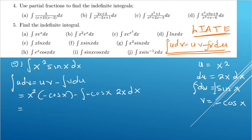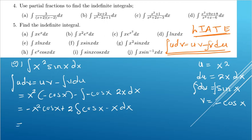The two negatives give a positive. Factoring out the constant 2, we get negative x²·cos(x) plus 2 times the integral of x·cos(x) dx. We need another round of integration by parts for this inner integral. So u equals x, du equals dx, dv equals cos(x) dx, and v equals sin(x) since d/dx of cos(x) is negative sin(x).